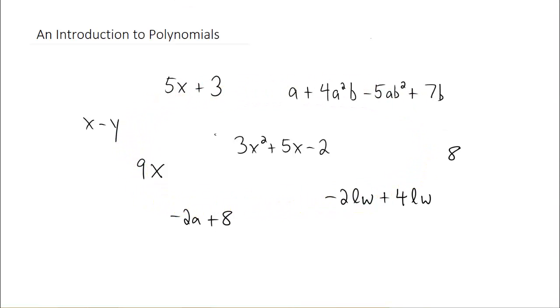There are a couple of polynomials written down here that only have one term. The number 8 is considered to be a polynomial, and so is just the term 9x. Since they're by themselves, we actually call these monomials. Mono meaning 1.